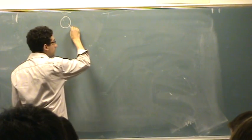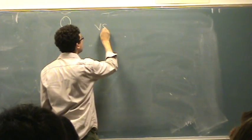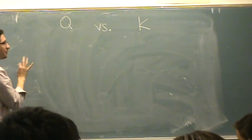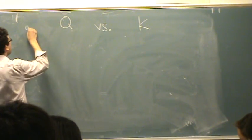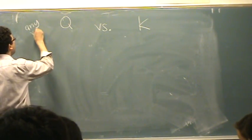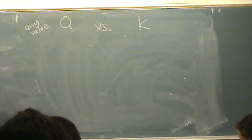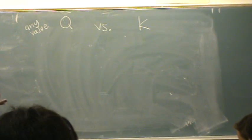Think back to equilibrium. Q versus K. If you vaguely remember this, Q can be any value. So we calculate Q based on the initial conditions and we find out what it was, big, small number, whatever.